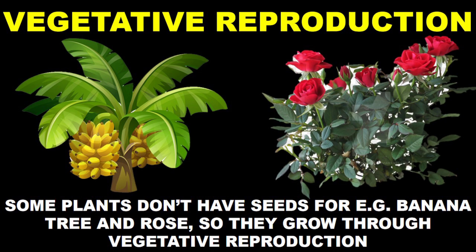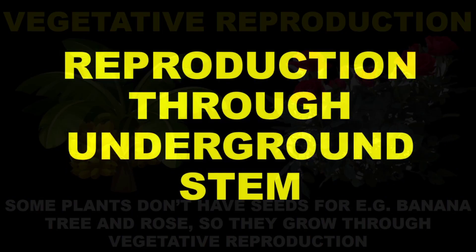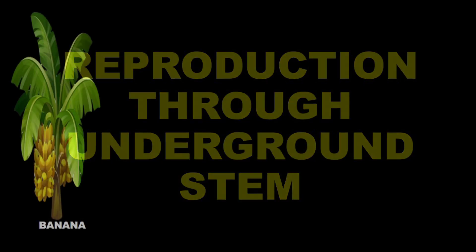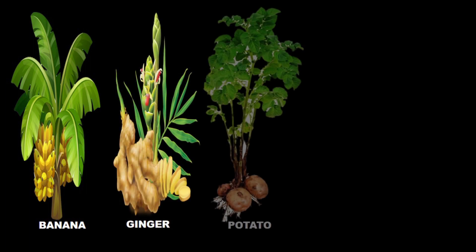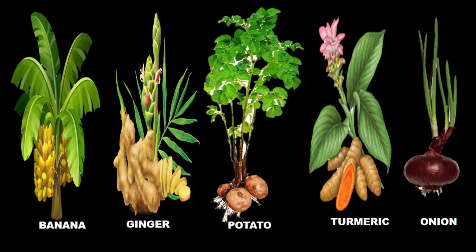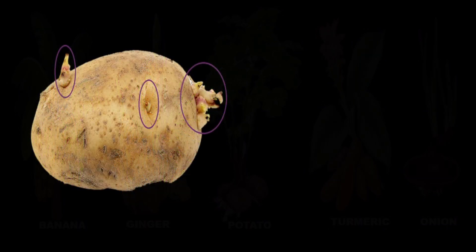First, we will discuss reproduction through underground stem. Examples include banana, ginger, potato, turmeric, onion, and lily — they all reproduce through underground stem. If you look at a potato, you must have seen it, and there are lots of depressions on it.